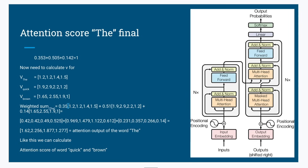We need to get the weighted sum for 'the'. These numbers get multiplied by V_the, V_quick, V_brown. We already saw how to calculate the value of 'the', value of 'quick', and value of 'brown' by matrix multiplication. Once we calculate this probability distribution, we multiply it with the values — that is called the weighted sum. Finally, after the calculation we get the attention output for 'the' — the final outcome after being impacted by all other inputs: 'the', 'quick', 'brown'.